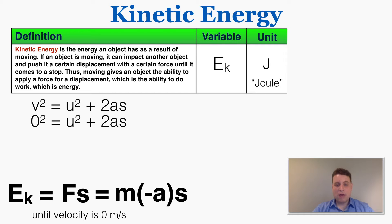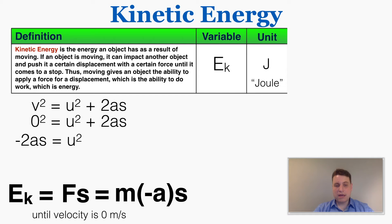Rearranging the equation, my goal is an expression for kinetic energy using only mass and initial velocity — the only two things giving the truck its energy. Solving for initial velocity gives u² = negative 2as, which means negative a times s equals one half u squared. Substituting that back into the kinetic energy equation, I can replace negative a times s with one half times the initial velocity squared.